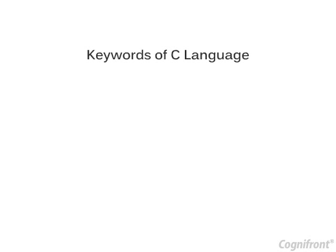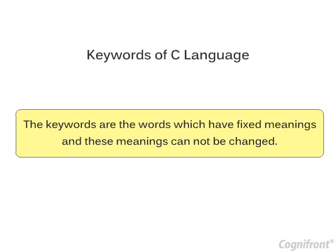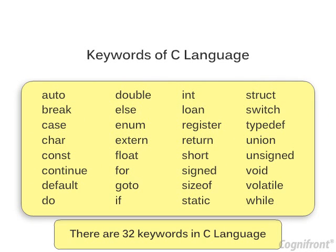Next, we will see the keywords of C language. The keywords are the words which have fixed meaning and these meanings cannot be changed. Keywords serve as basic building blocks for program statements. There are in all 32 keywords in C language. Observe the list of keywords.